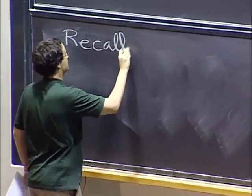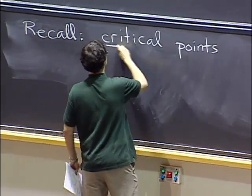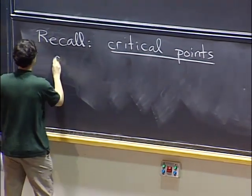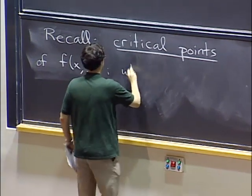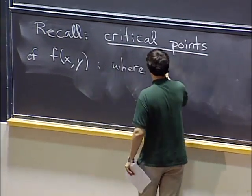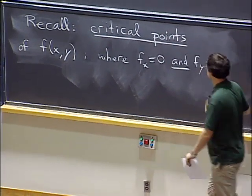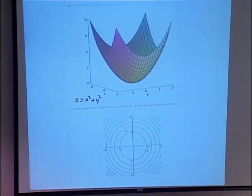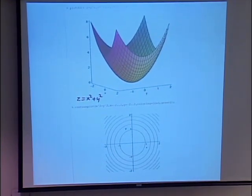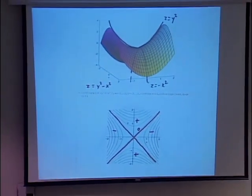Remember, yesterday we looked at critical points of functions of several variables. A critical point of a function of two variables x and y is a point where the partial derivatives are both zero. We have seen that there are various kinds of critical points: there are local minima, local maxima, and saddle points, which are neither minima nor maxima.